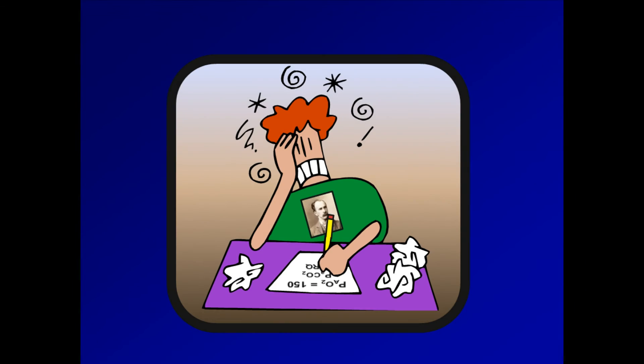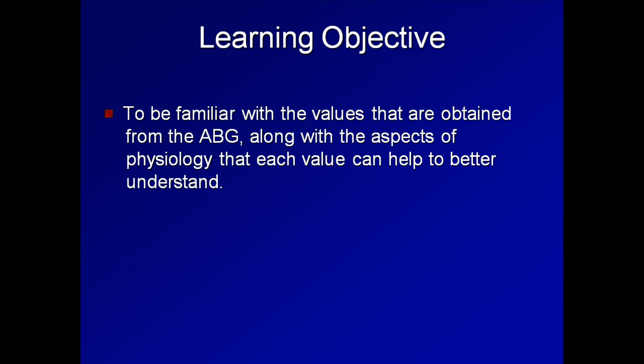Although I will be working through dozens of examples during this course, mastery of ABG interpretation will only happen if you practice it on your own. Watching someone else solve problems will be helpful, but it won't be sufficient. Therefore, I would encourage you to intermittently pause these lectures as I go over individual examples and attempt to first reach the answer yourself. The remainder of this lecture will give a very brief grand overview of the ABG. The learning objective is to be familiar with the values that are obtained from the ABG, along with aspects of physiology that each value can help to better understand.